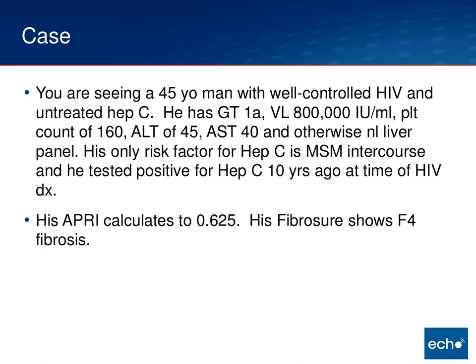In terms of his risk factors, no injection drug use. He is MSM and he tested positive for hep C 10 years ago, at the time of his HIV diagnosis. If you do the calculations on the platelet and the AST, his APRI calculates at 0.625, but a FibroSure shows F4 fibrosis. So to summarize: a low APRI but a high FibroSure.